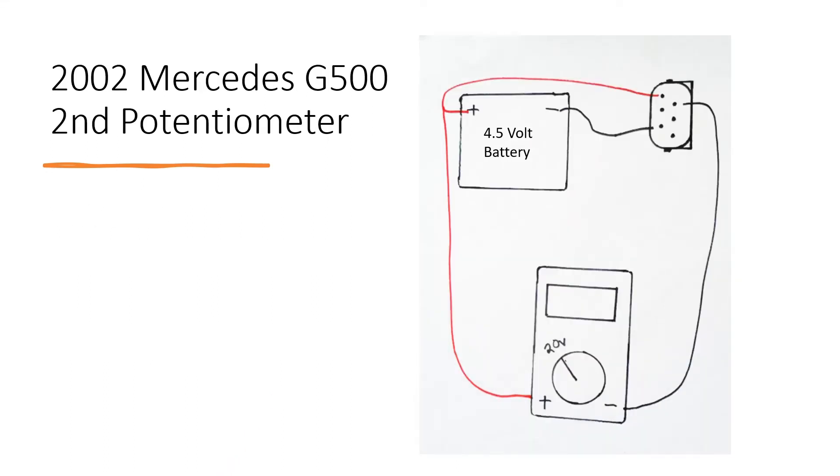For the second potentiometer the multimeter is still going to be set at 20 volts just like this. The positive from the battery and the multimeter will connect up to this top left pin just like this. The negative from the battery will connect up to the bottom left pin and the negative from the multimeter will connect up to the top right pin.